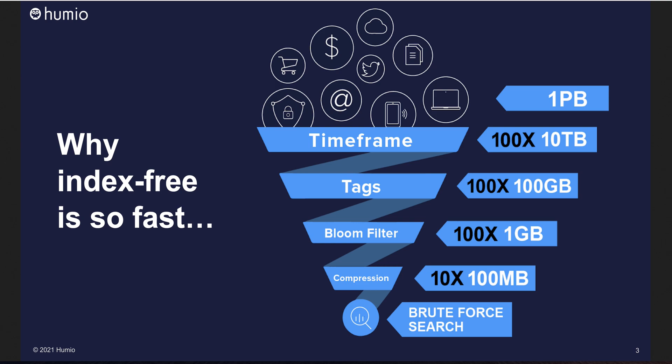The second layer is tags. The context of data is stored in lightweight tags, summarizing things like where the data came from or how it is used. These are used to further reduce the data set. Third are bloom filters, which tell us with certainty where data is not and probabilistically where data might be. Then there is compression — we use LZ4 compression, a method that is highly adaptable to parallelization. With a significantly smaller amount of data to search, we can do brute force searching on the remaining data.